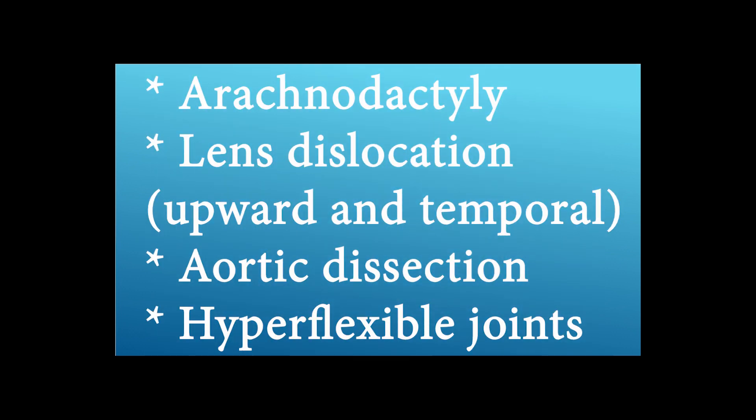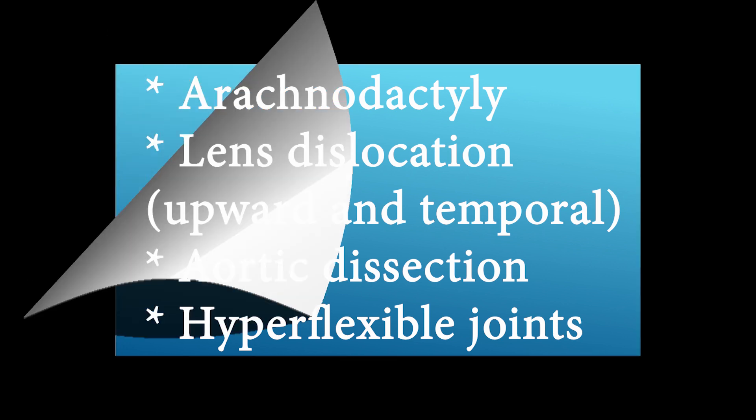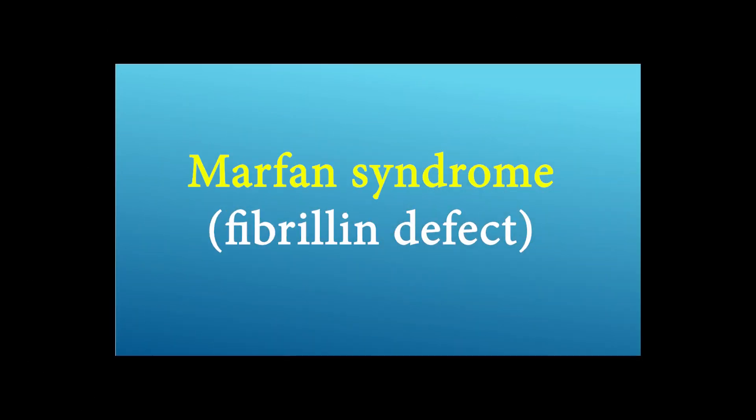What is the disease of these signs and symptoms? Arachnodactyly, lens dislocation upward and temporal, aortic dissection, and hyperflexible joints. The answer is Marfan syndrome — a fibrillin defect.